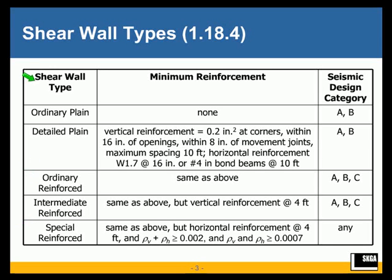To start, a review of the masonry shear wall types, as given in Section 118.4 of the 2011 code. There are five shear wall types.